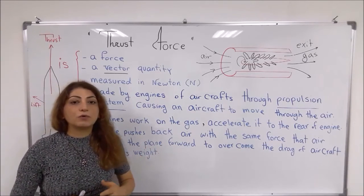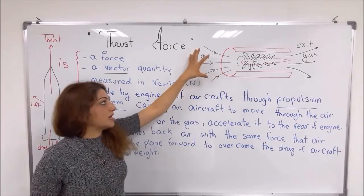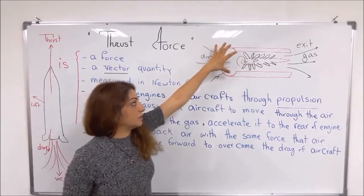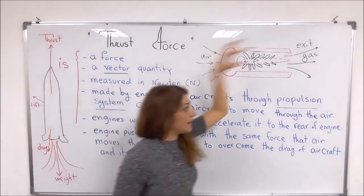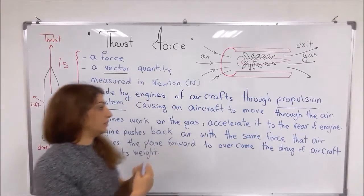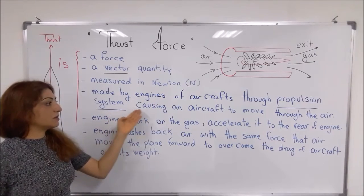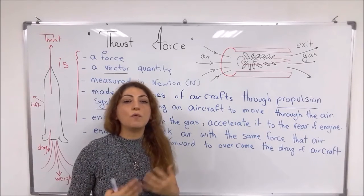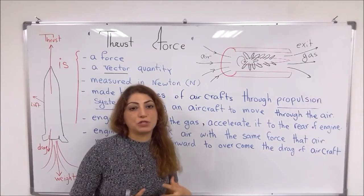What do the engines do? They work through the propulsion system. As you can see in the diagram, they take in air from the front of the engine and send it into a tube with a propeller, turning it around and pushing the air to the rear of the engine, causing the airplane to move forward — overcoming the weight and drag forces on the object moving through the air.